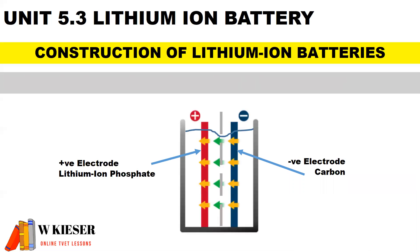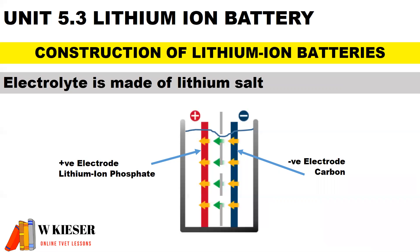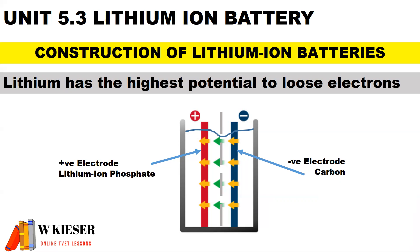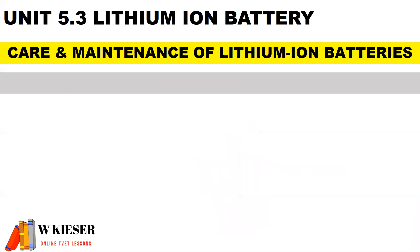In unit 5.3, we'll take a look at lithium-ion batteries. In terms of the construction of a lithium-ion battery, the electrolyte is made of lithium salt. The separator allows lithium-ions to pass through it via tiny little holes. Lithium has the highest potential to lose electrons.